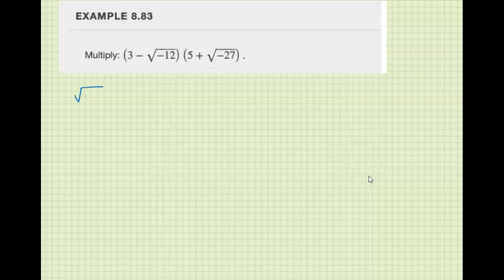So let's just do it aside. We have square root of negative 12. This is square root of 4 times the square root of 3 times the square root of negative 1. So we get 2i square root of 3.